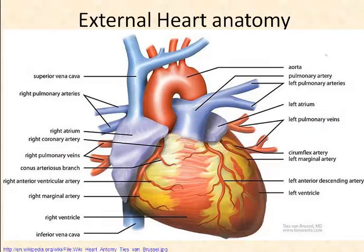Looking at the external heart anatomy, we can see that one of the most prominent features is the blood vessels. Blood returns to the right side of the heart via the inferior vena cava and the superior vena cava. It's deoxygenated blood, and as it enters the right side of the heart it is immediately pumped out to the lungs to drop off carbon dioxide and pick up oxygen. It leaves the heart via the pulmonary artery, which branches into pulmonary arteries, one going to each lung.